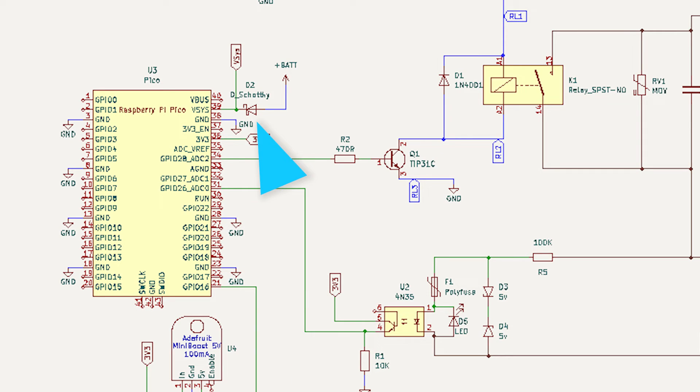Up here in the top left, we've got a little diode. It's a Schottky diode, so it's a lower voltage drop than a regular diode that protects the battery from when we plug in the Pi Pico for debugging on the USB.